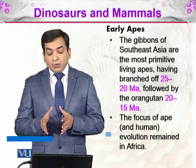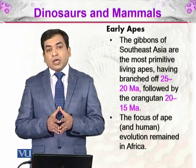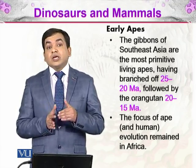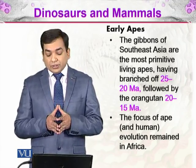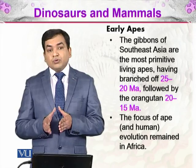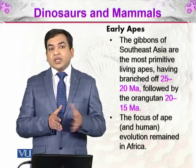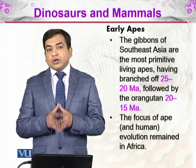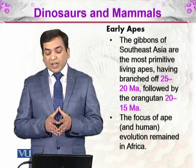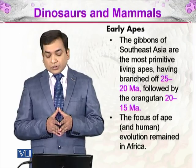The gibbons of Southeast Asia are the most primitive living apes. That means they diverged the earliest, having branched off 25 to 20 million years ago. They parted their ways 25 to 20 million years ago, followed by the orangutans, which diverged 20 to 15 million years ago.